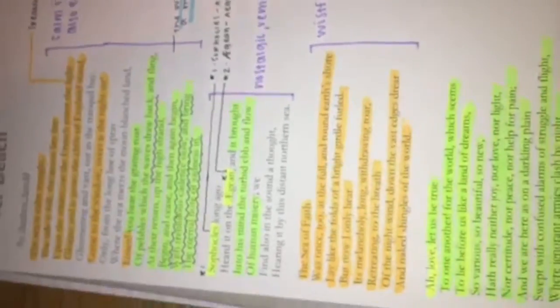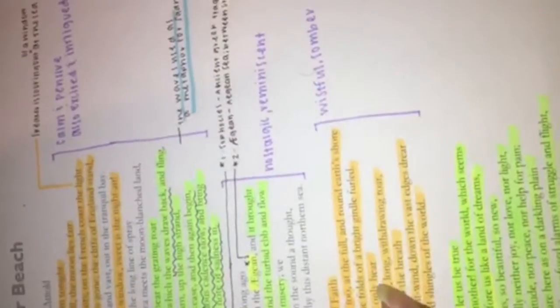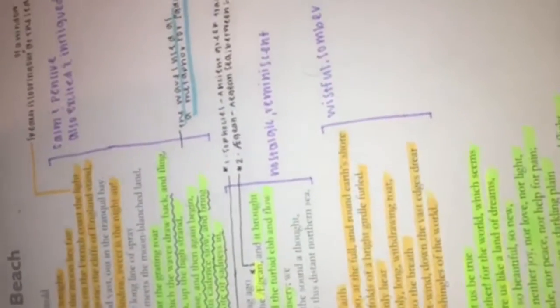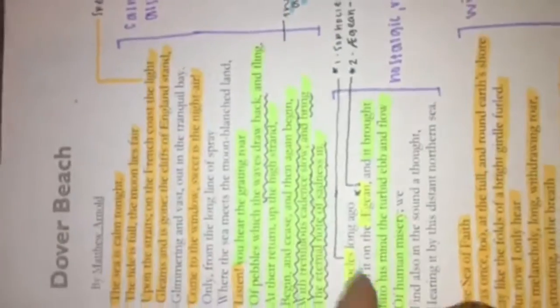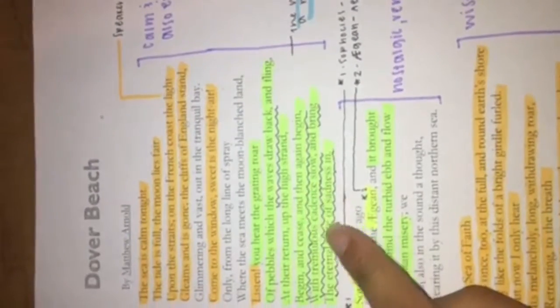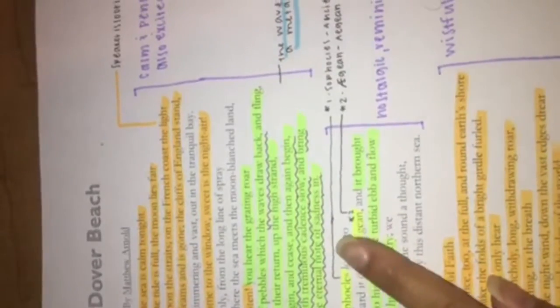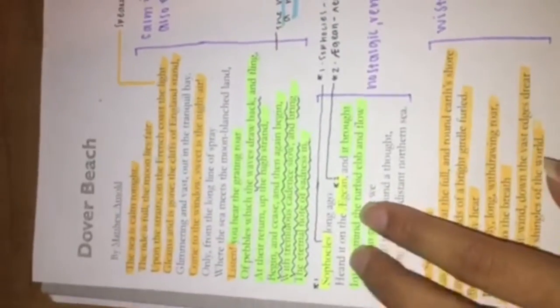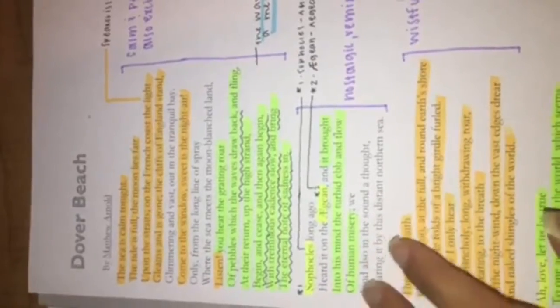Then, the purpose is to kind of convey this idea that emotion and sadness is like waves. Here it says, the grating roar of pebbles which the waves draw back and fling at their return up the high strand, begin and cease, and then begin again with tremulous cadence slow, and bring the eternal note of sadness in. So the waves are coming in and out like sadness, and it says that Sophocles heard it on the Aegean and it brought to his mind the turbid ebb and flow of human misery.